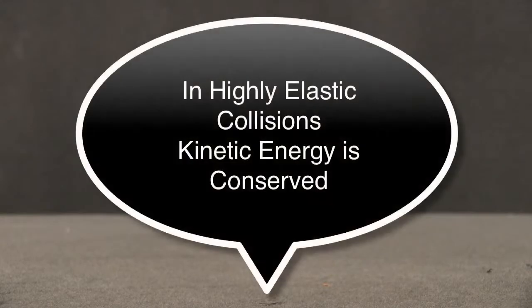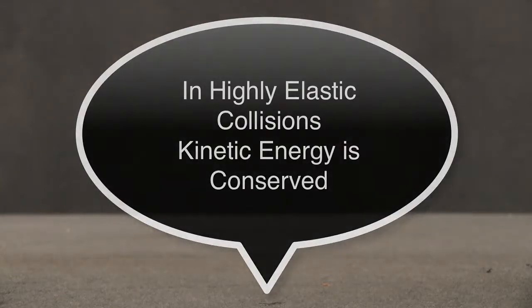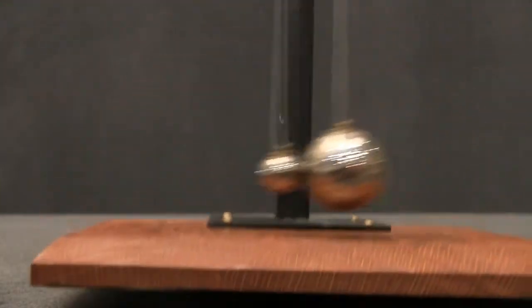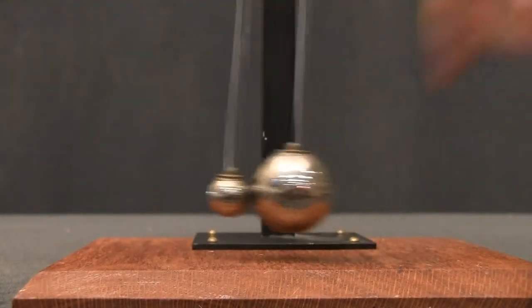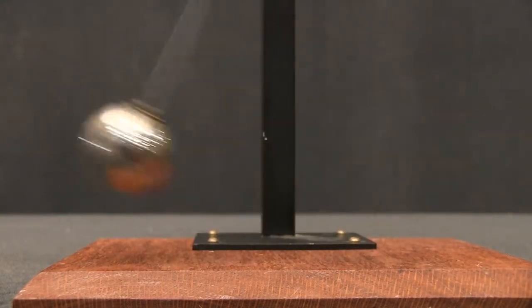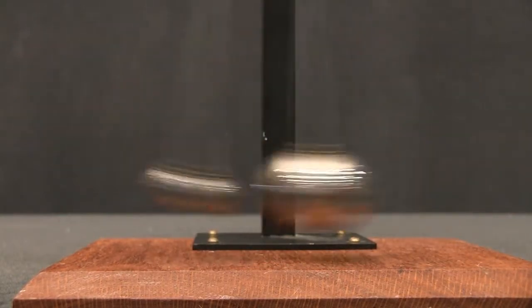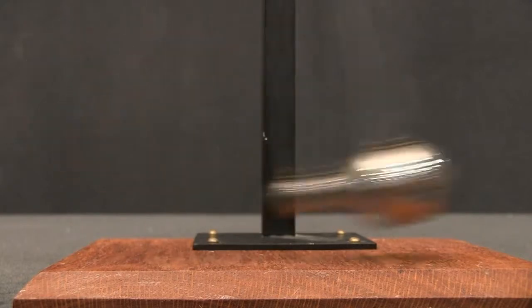An elastic collision means that the kinetic energy — the energy of motion — is not diminished during a collision. So when we have the highly elastic balls, the motion continues; they don't lose their kinetic energy.